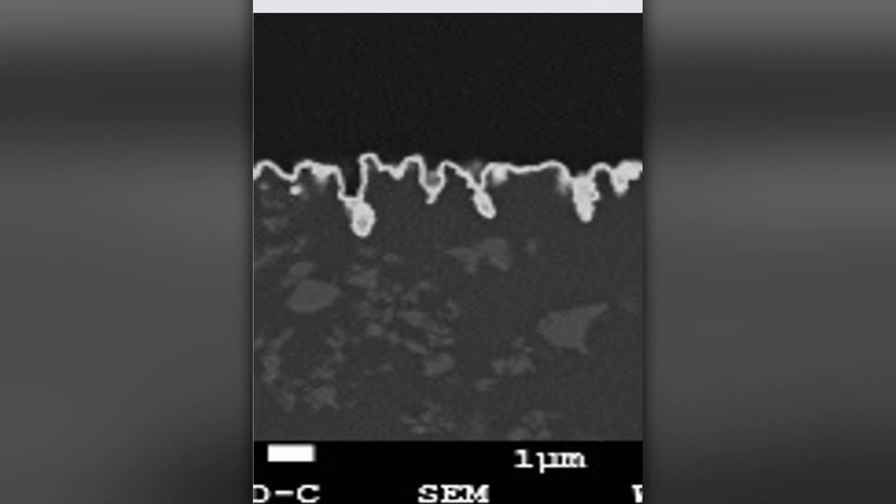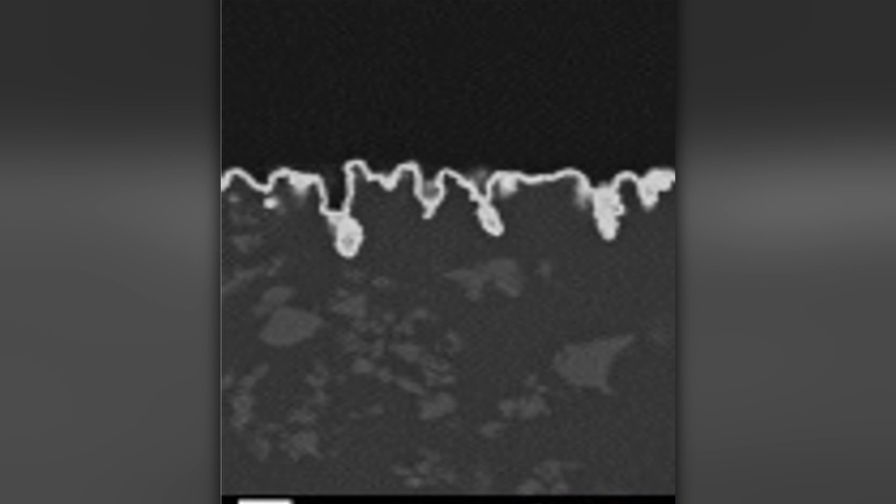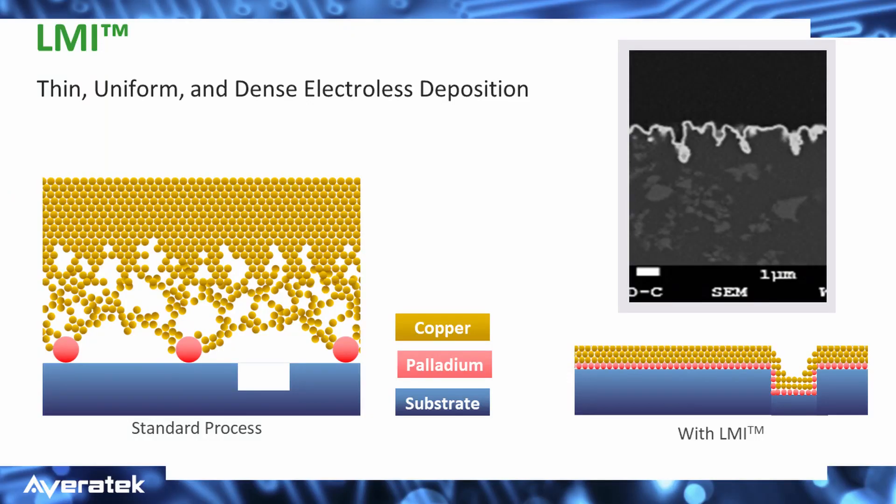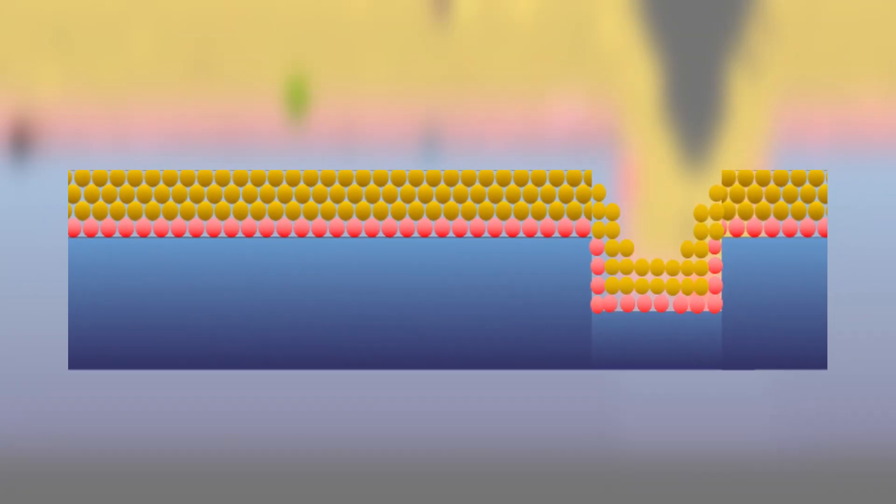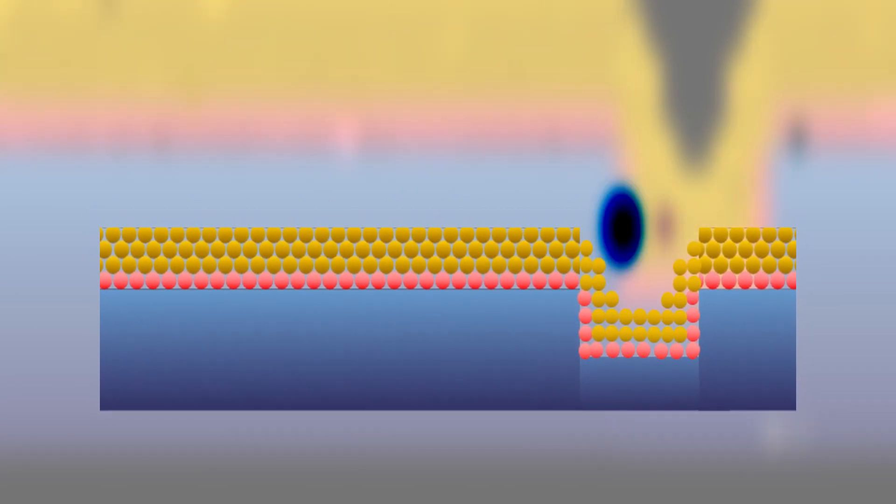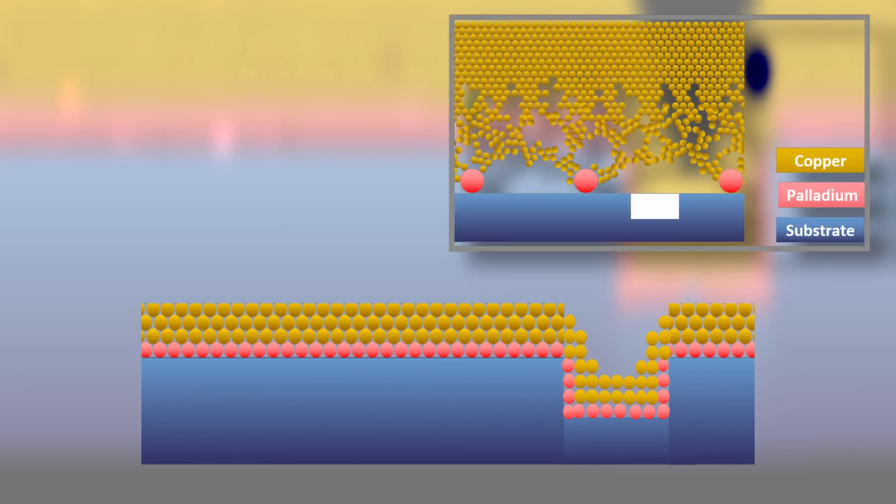You can see from the SEM photograph just how thin that copper is and how it conforms to all the surfaces of the dielectric. You can also see a graphical representation here of your base substrate, which would be in blue, the palladium seed layer or the LMI that we had talked about, and then the electrolysis copper. So the LMI is going to be just a few nanometers thick and the electrolysis itself is going to be 0.2 to 0.3 microns thick. So much thinner than traditional electrolysis copper plating.